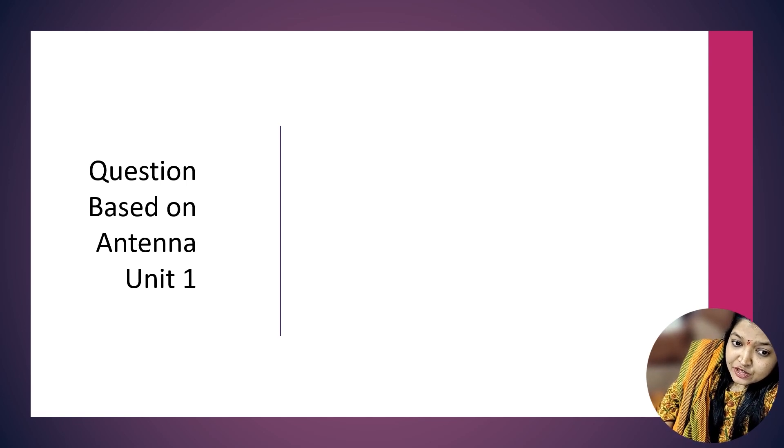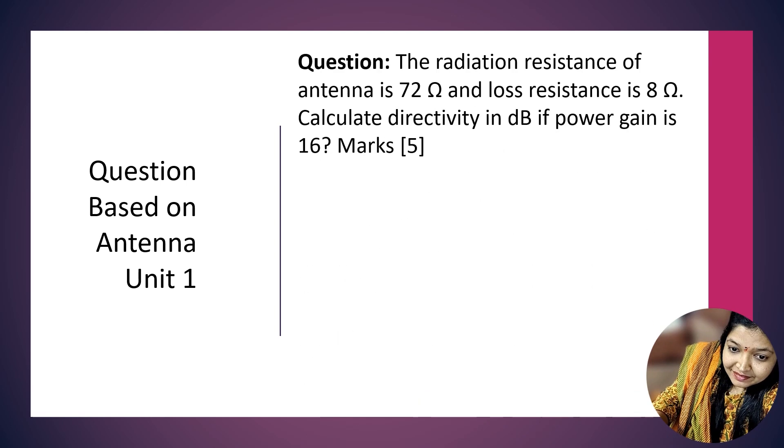The second question is again based on Antenna Unit 1. The given data is: antenna resistance 72 ohm, loss resistance 8 ohm. The question is: calculate directivity in dB if power gain is 16. This question is for 5 marks.